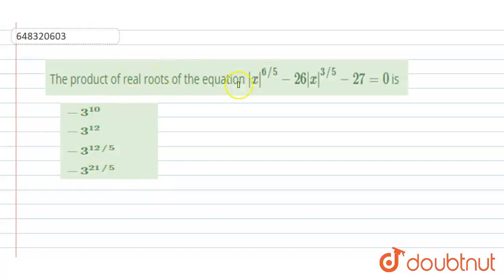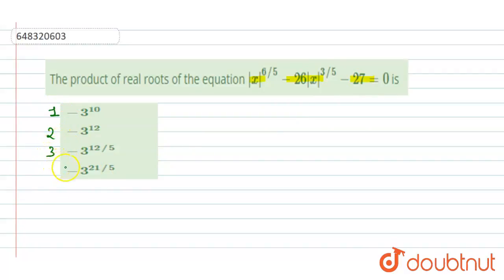Our question is: find the product of real roots of the equation |x|^(6/5) - 26|x|^(3/5) - 27 = 0. The options given are: first, -3^10; second, -3^12; third, -3^(12/5); and fourth, -3^(21/5).